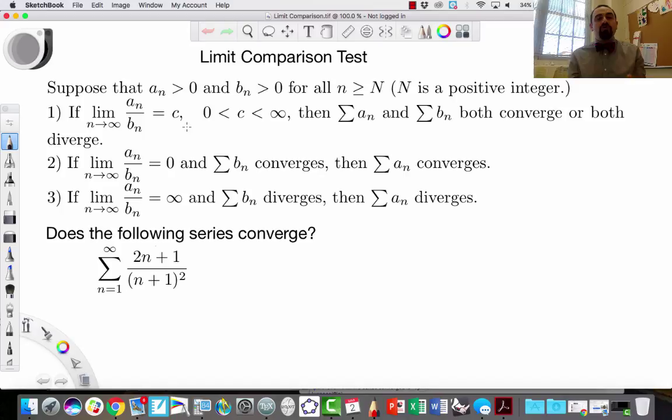You'll see that here I've written two other statements as well. And we can use these other two statements as well, but we're going to use the Limit Comparison Test with number one most often. Numbers two and three are slightly weaker. This says that if the limit of the fraction goes to zero, that means that the bottom is going faster than the top, forcing it to go to zero.